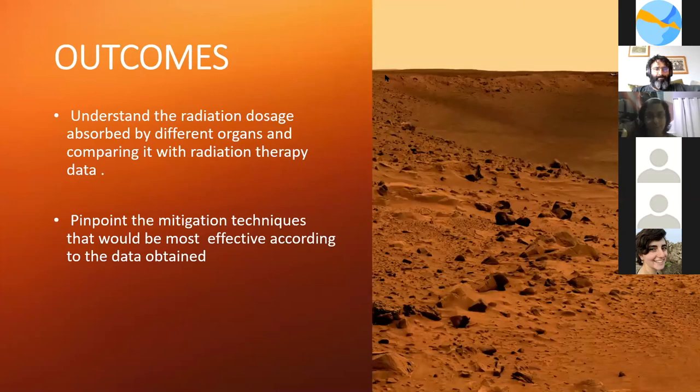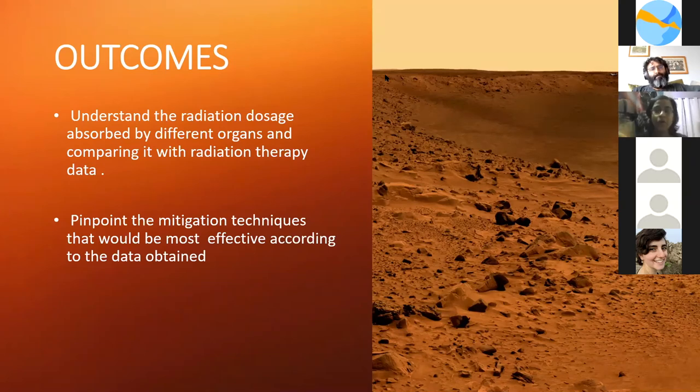The main outcomes of this project were to understand the radiation dosage absorbed by different organs. Once we calculated radiation doses deposited for the entire solar proton spectrum, and then pinpoint the mitigation techniques that will be the most effective according to the data we obtained. Only after going to the biological literature will we be able to predict the potential side effects of being exposed to the radiation.